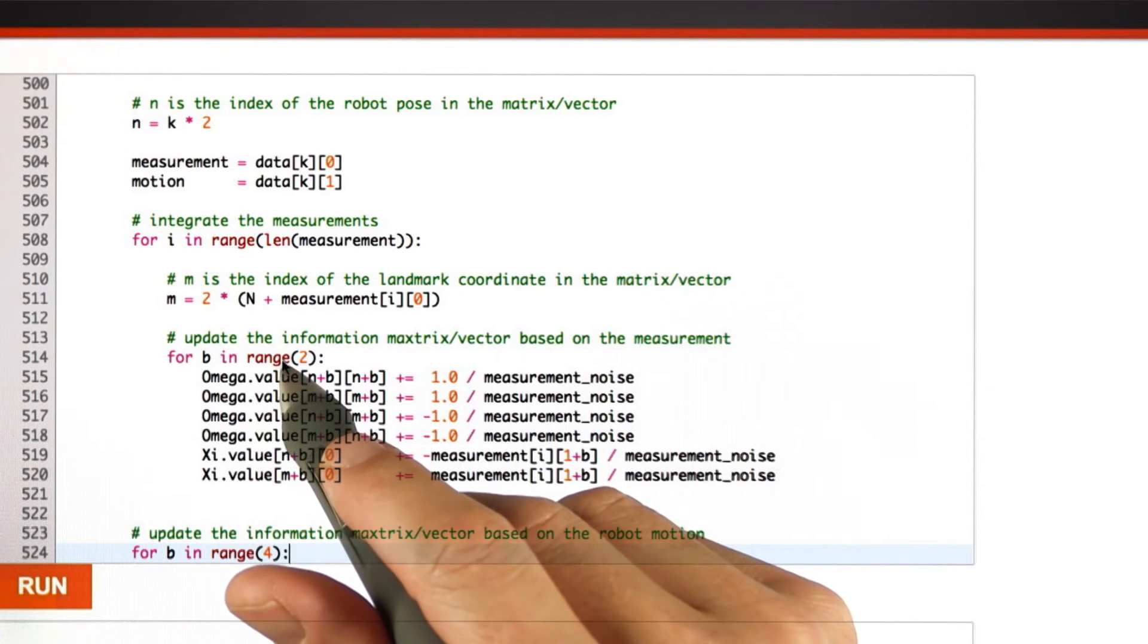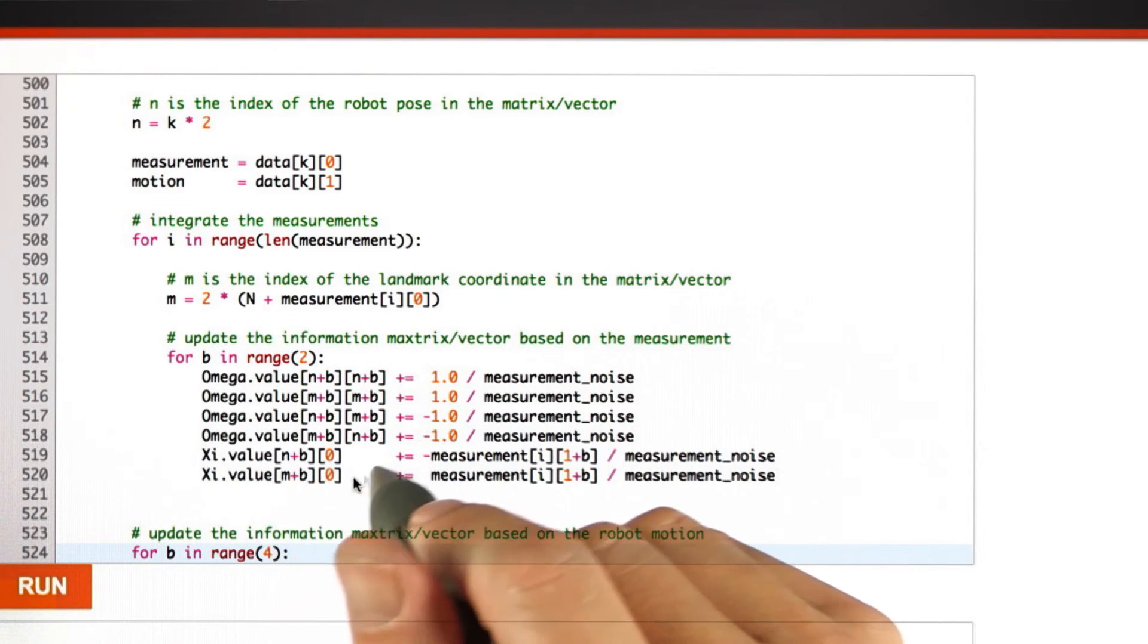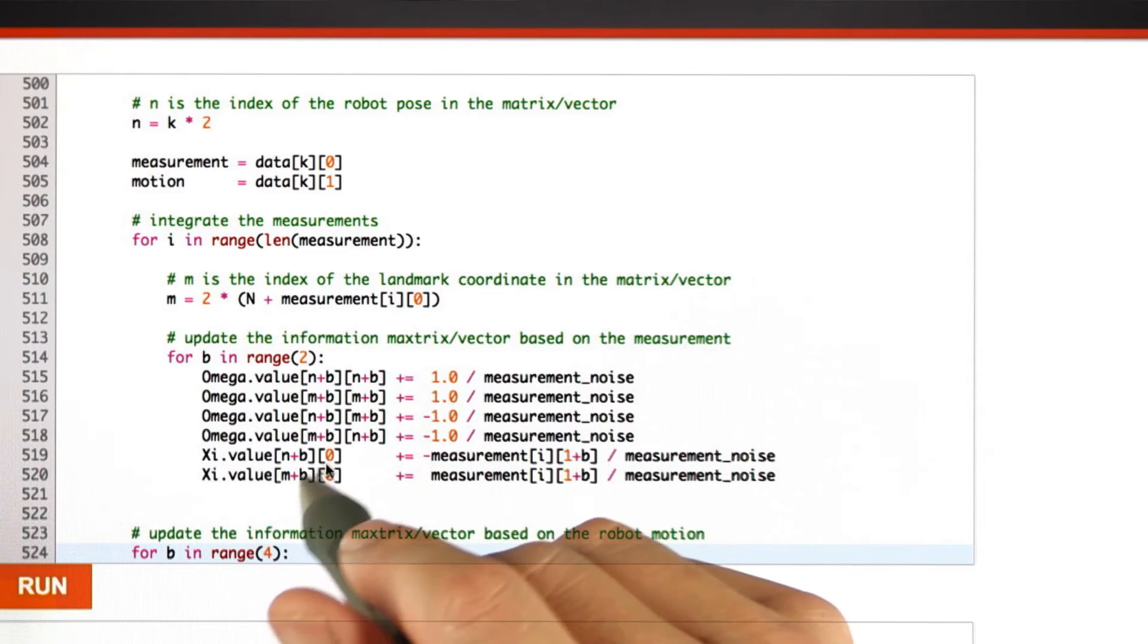So b goes from 0 to 1. And these are all the combinations. You have to stare at them to make sure they're all correct. But I can promise you they're actually all correct.